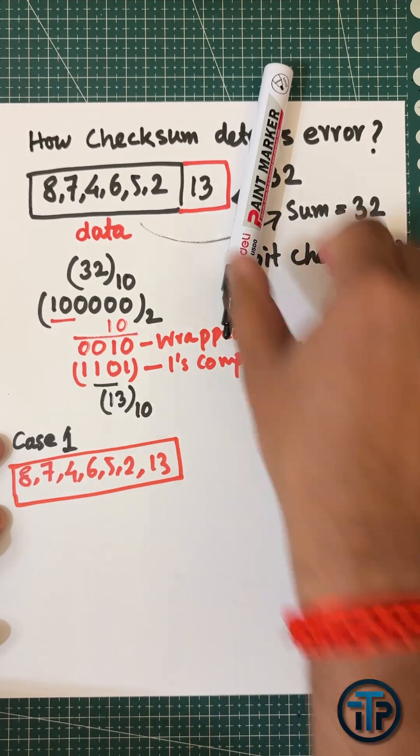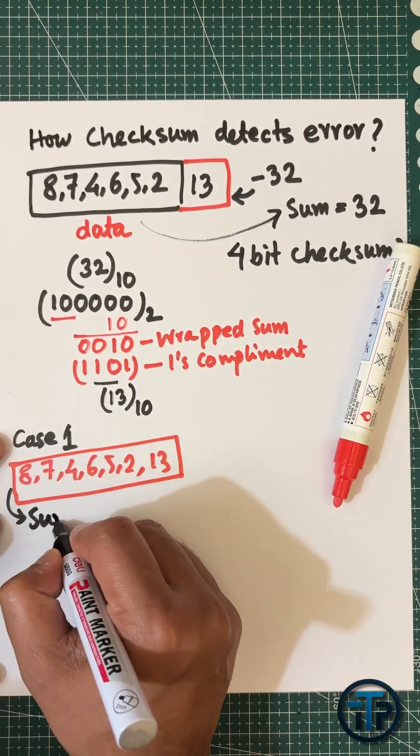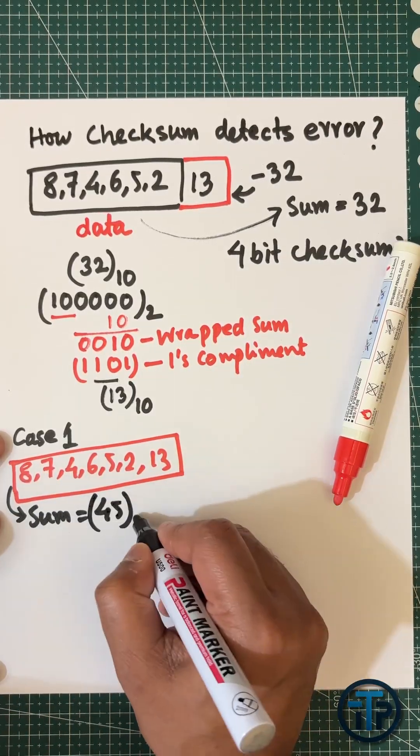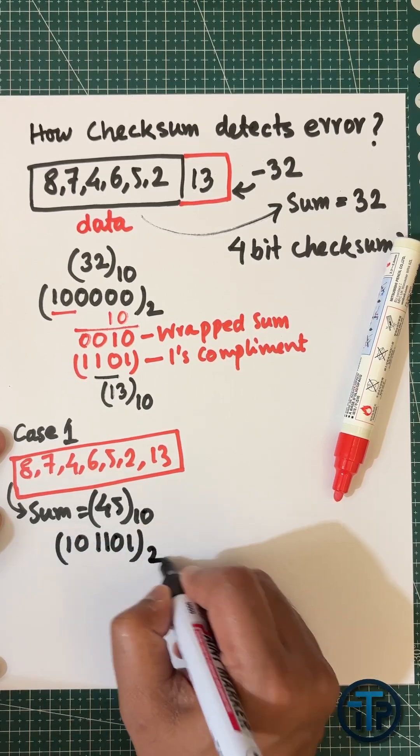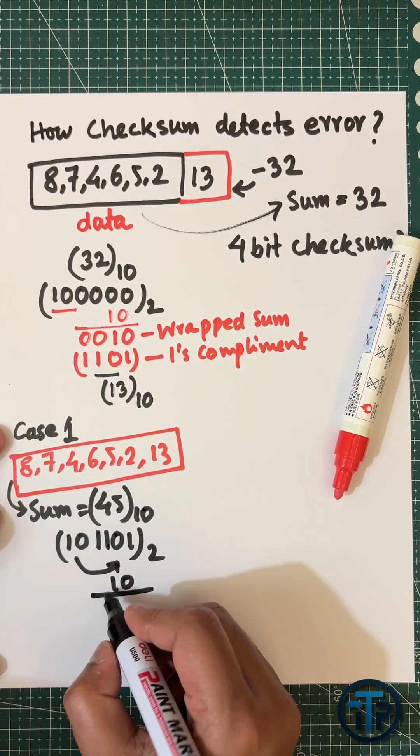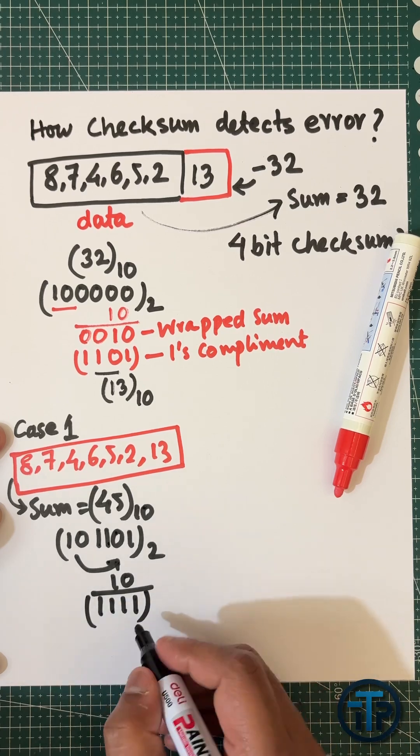The data is 8, 7, 4, 6, 5, 2 with the checksum 13. The sum is 45, which in binary is 101101. After wrapping, all bits are ones, indicating no error.